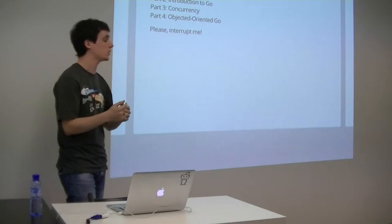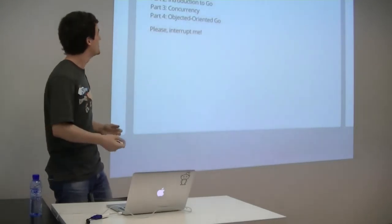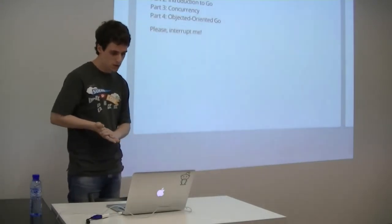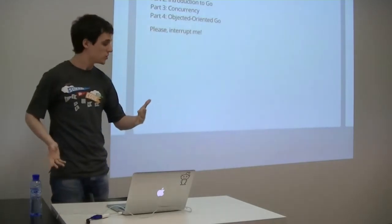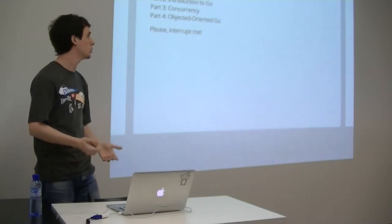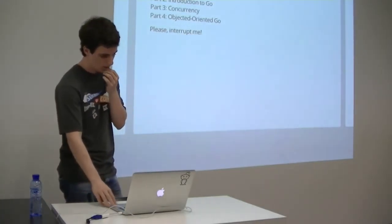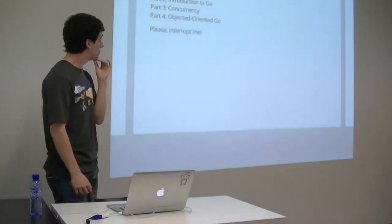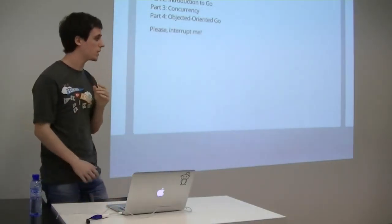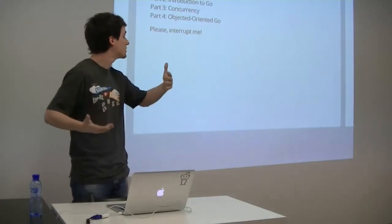Since it's impossible to describe a whole language in just 40 minutes, I'm going to divide it into four parts and go a bit fast. I'll put some links so you can read more. I'll start with the background of the programming language, then an introduction to the language itself — things like loops and basic statements — then concurrency, and finally object-oriented Go. You can interrupt me whenever you want.